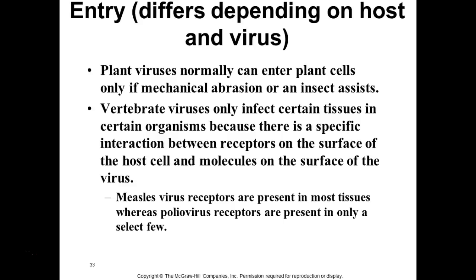Vertebrate viruses only infect certain tissues in certain organisms because of specific interactions between viral proteins and host cell surface receptors. The measles virus, for example — that receptor is present in most tissues of your body, which is why you get massive dissemination and why it can be life-threatening. Poliovirus, on the other hand, has receptors present only in a select few tissues — that's why it targets particular areas.